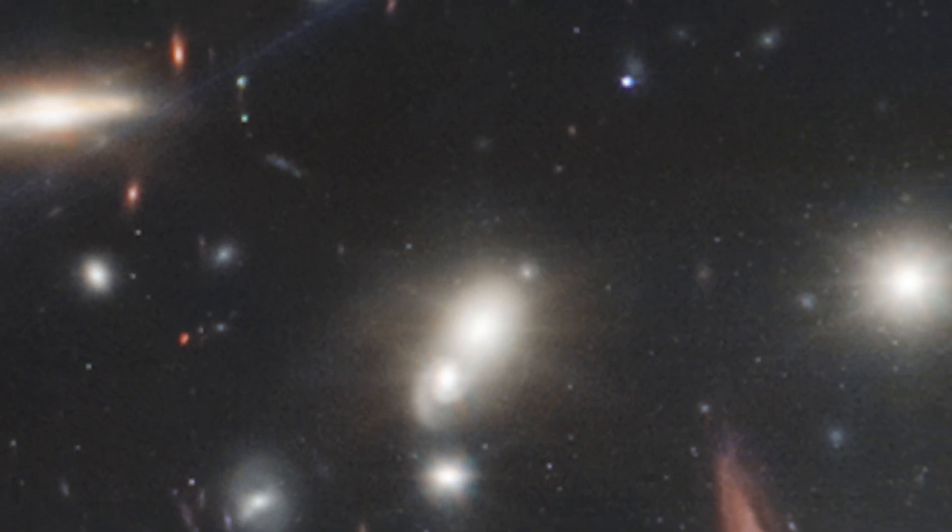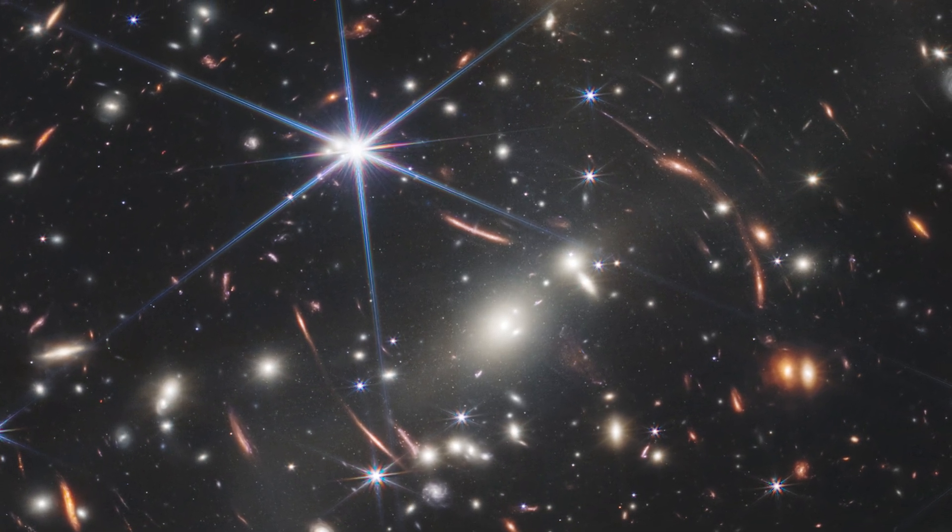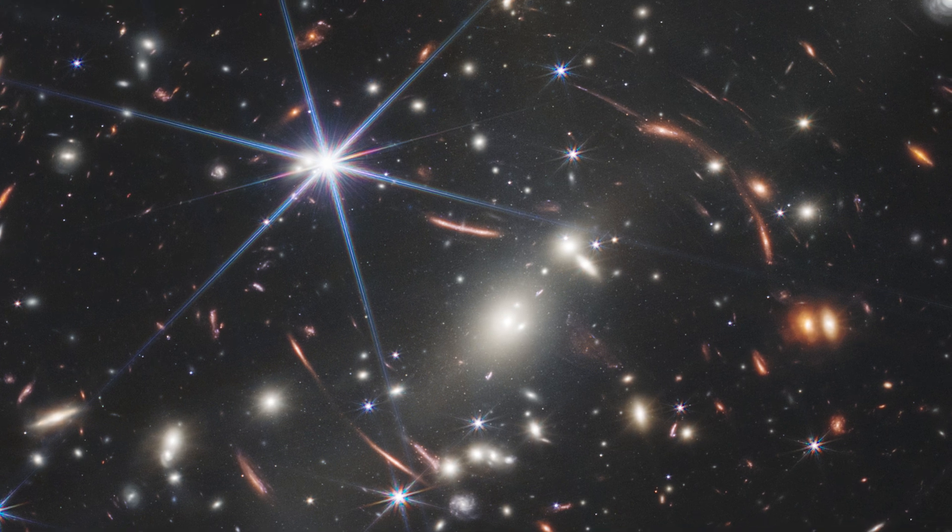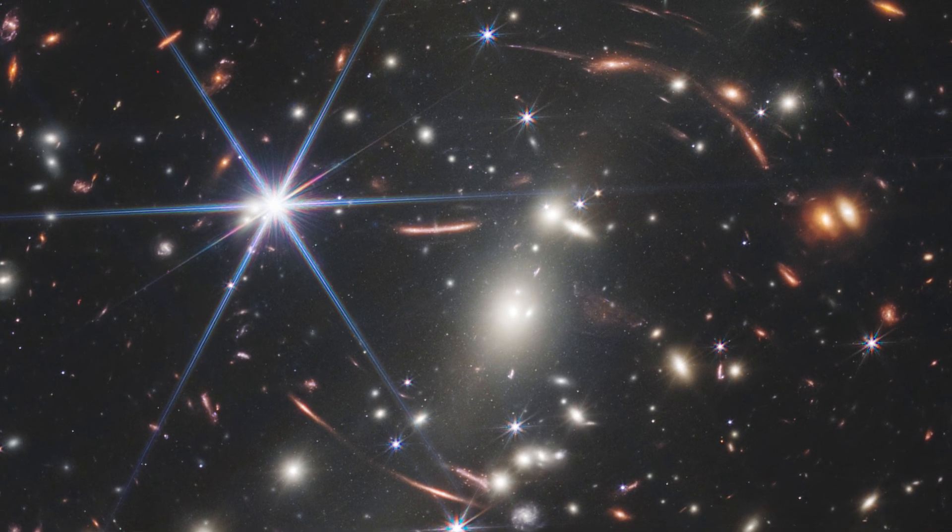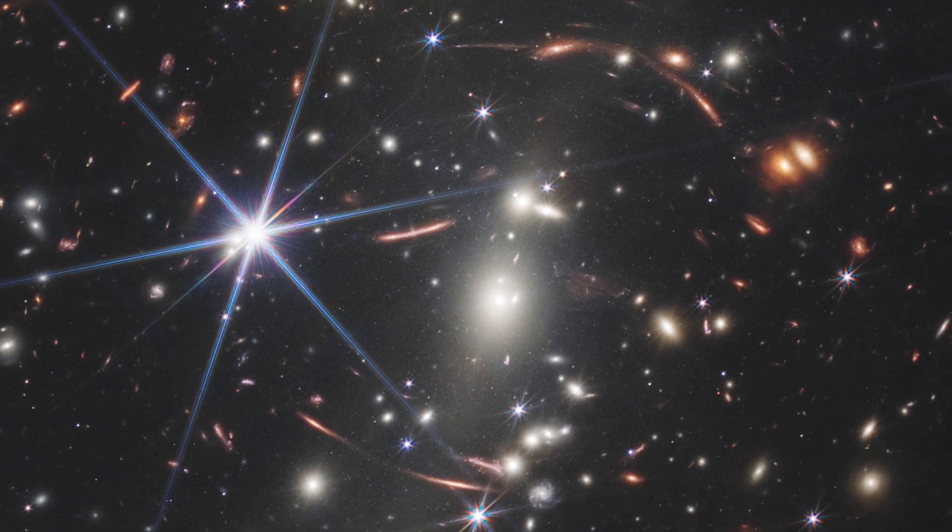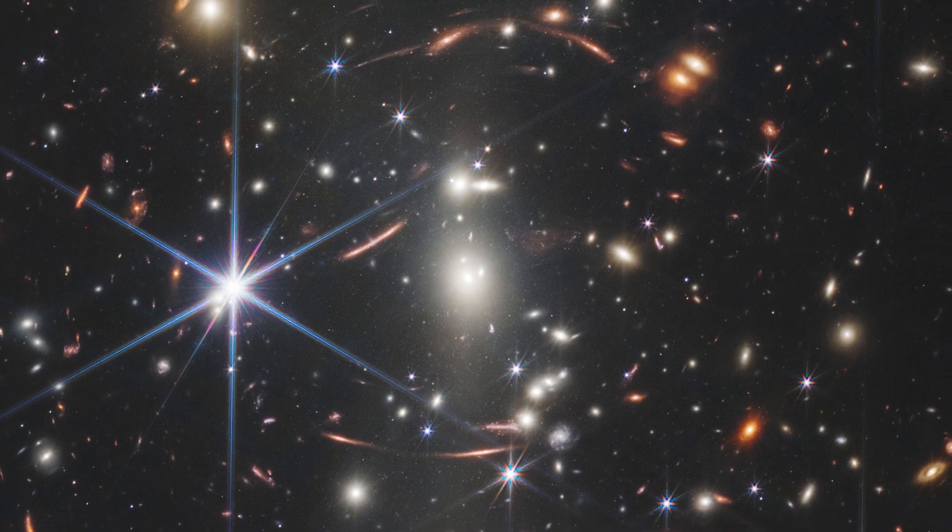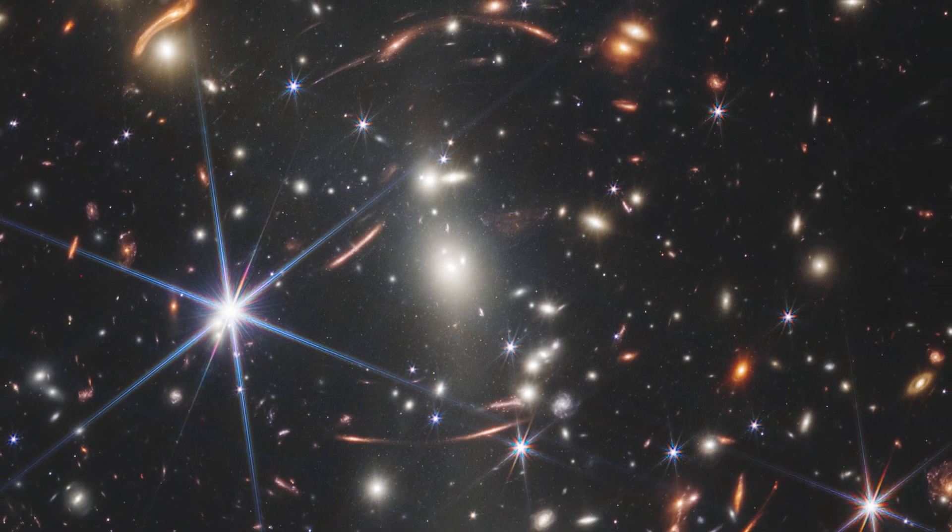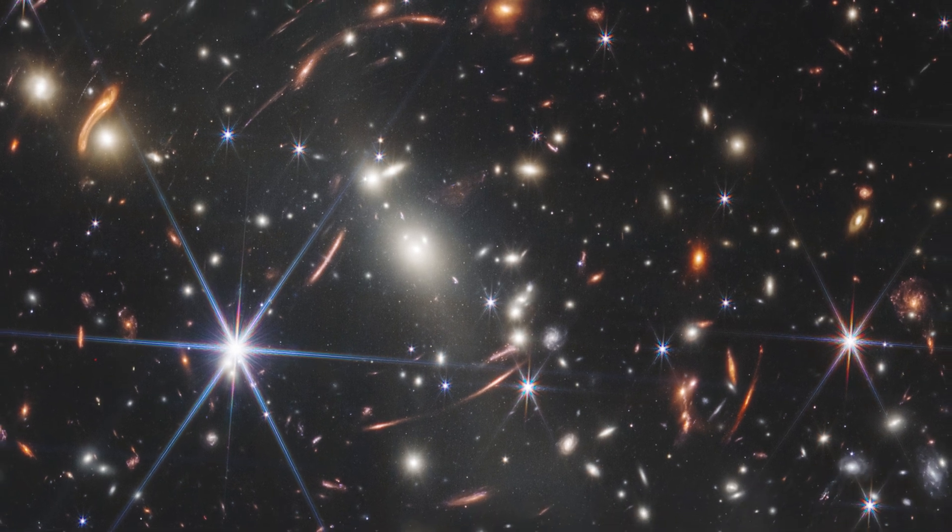One picture of the galaxy cluster SMAC 0723 showcases Webb's ability to peer into the most distant corners of the universe and hence the furthest back in time. James Webb's near-spec spotted 48 of the hundreds of far-off galaxies that make up galaxy cluster SMAC 0723 all at once in a field about the size of a sand particle held at an arm's length.